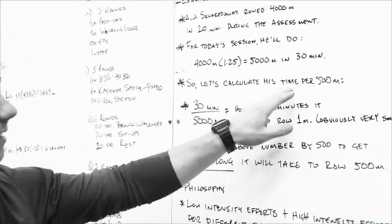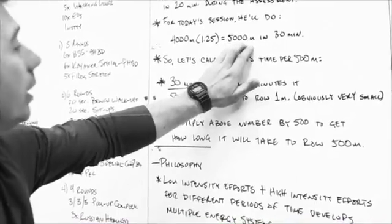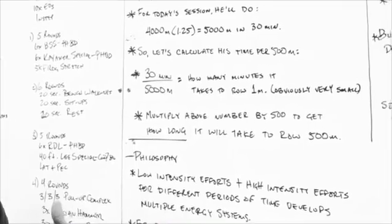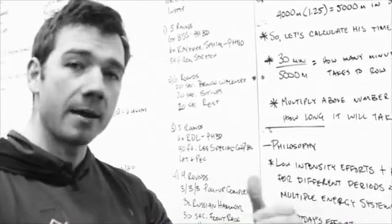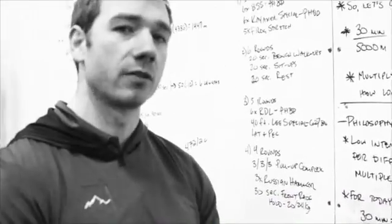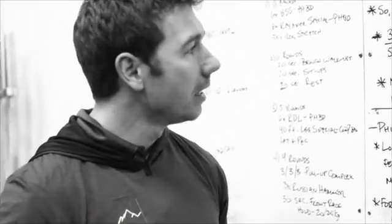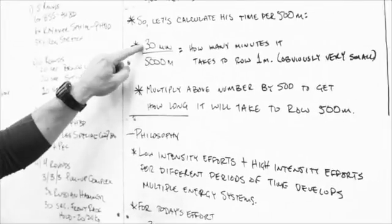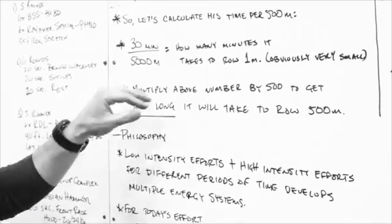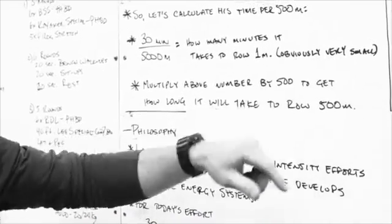So let's calculate his time for 500 meters because we know how much he has to row in the total time. But on most rowers, it measures your time per 500 meters. And we're used to calculating meters per time or distance over time. Now we're calculating time per distance. So if we take 30 minutes, the total time, divided by 5,000 meters, then we're going to figure out how many minutes it takes to row a single meter. Obviously, this is a very low number.